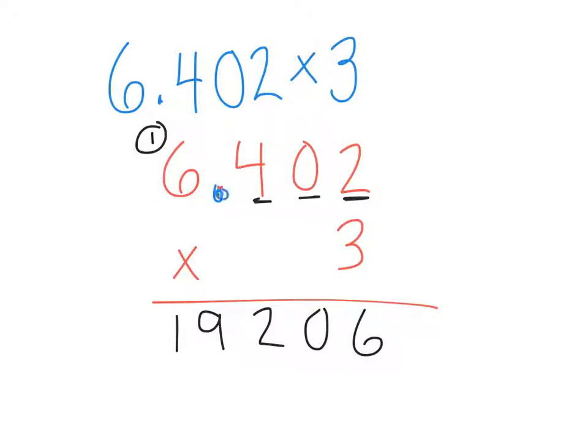So I'm going to look for my decimal at the top. There are 1, 2, 3 digits or 3 numbers after my decimal place. This means that in my answer, I also need 3 digits or numbers after my decimal place. So I'm just going to start down here. 1, 2, 3. And so my product or my answer is 19 and 206 thousandths.